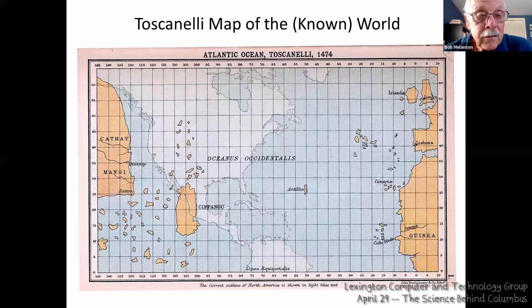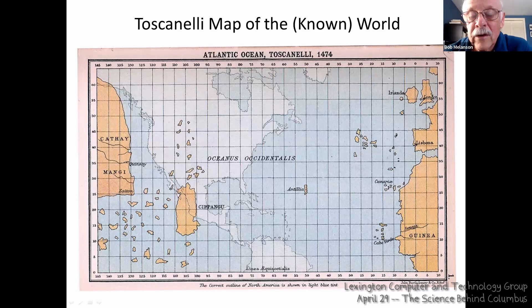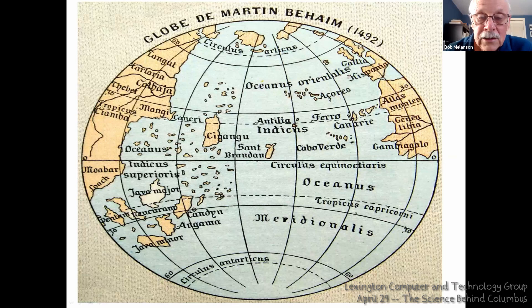Here's the world according to Toscanelli — that island called Chipangu is Japan. You can see it's about 3,000 to 3,500 miles away on this map. And here's the globe according to Martin Behaim — about the same distance away. Obviously, there's no North America. In both cases, there are islands out in the middle of the Atlantic that aren't really there. Nothing was known for sure at this point.